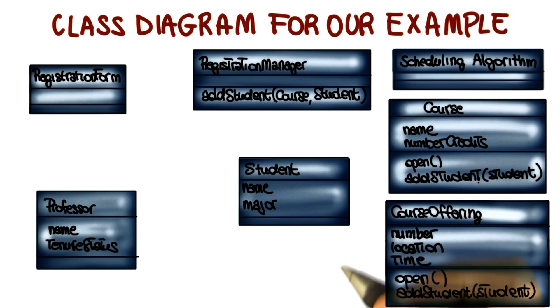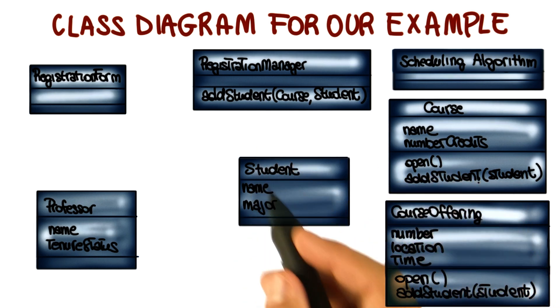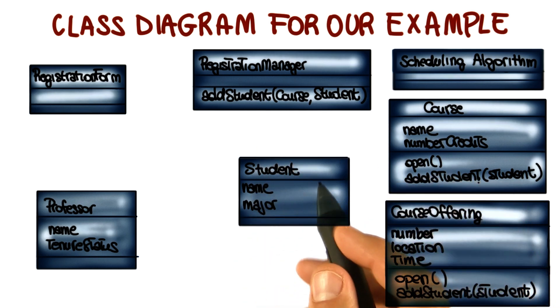There is one thing that we're missing, a very important aspect of the class diagram, which is the relationships between these classes.